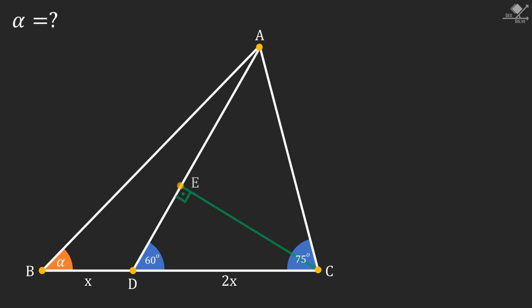First, drop a perpendicular from point C to line segment AD at point E. This will create a 30-60-90 degree triangle and a 45-45-90 degree triangle as follows.